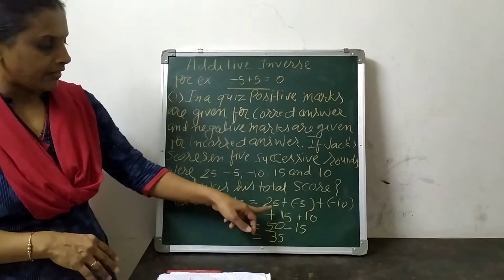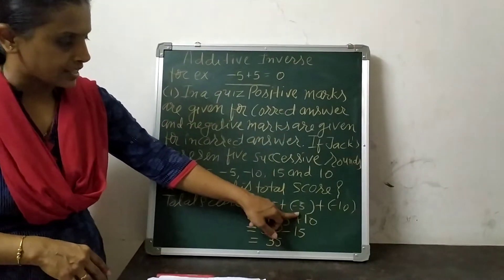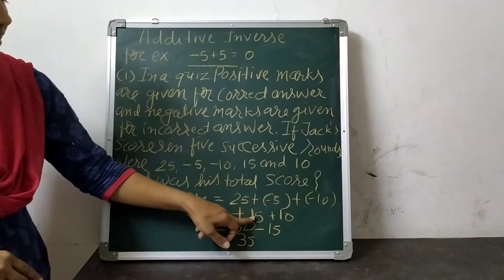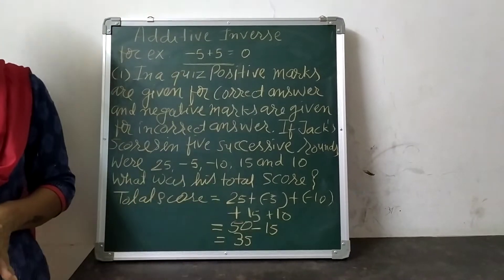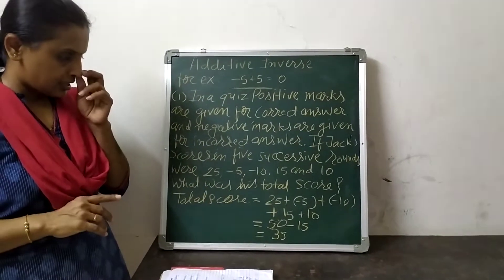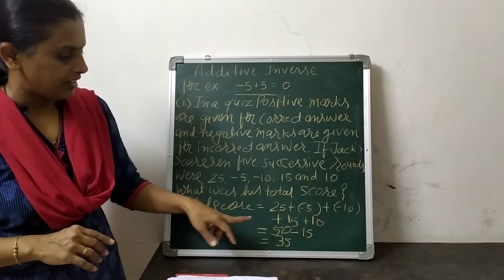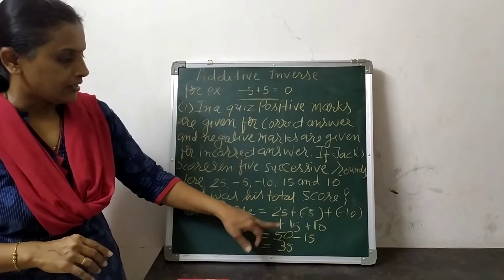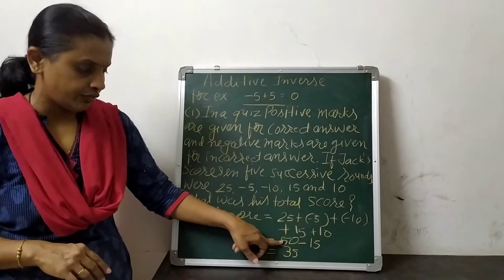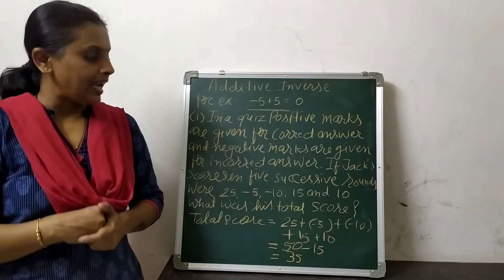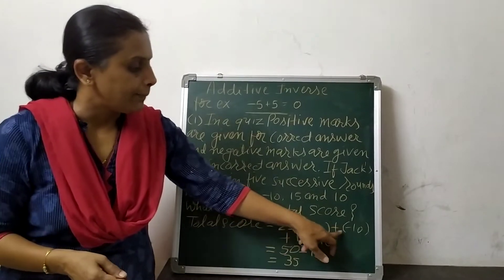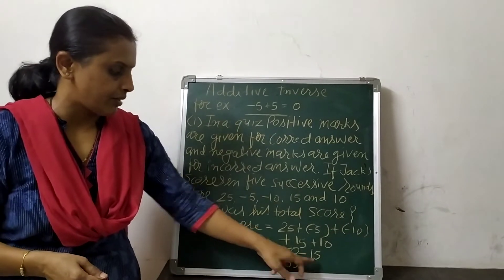Total score is equal to 25 plus minus 5 plus minus 10 plus 15 plus 10. First, we will add all the positive integers. The sum of positive integers is equal to 50. 25 plus 15 is equal to 40, plus 10 is equal to 50. Now we will add negative integers. Minus 5 plus minus 10 is equal to minus 15.